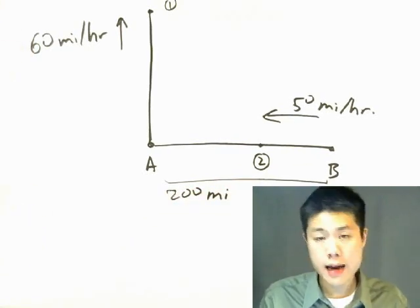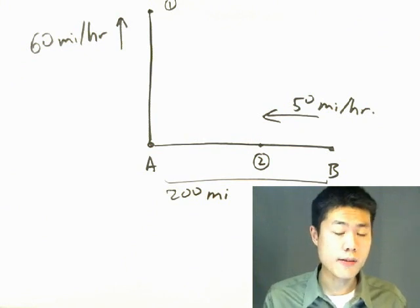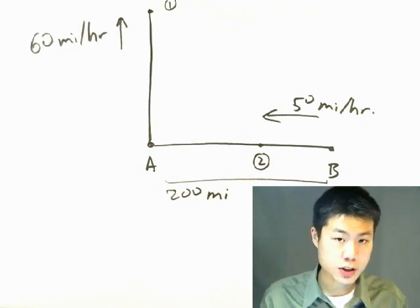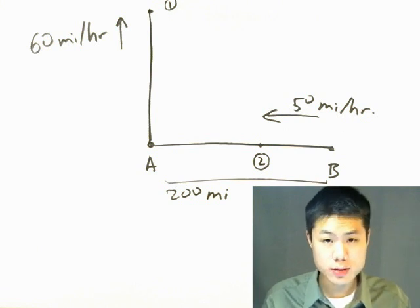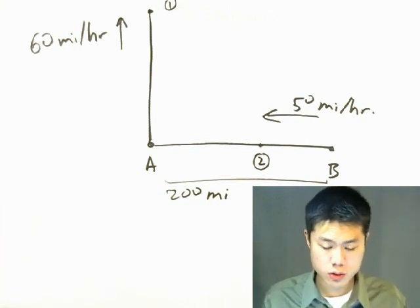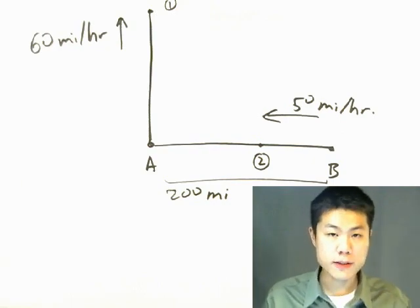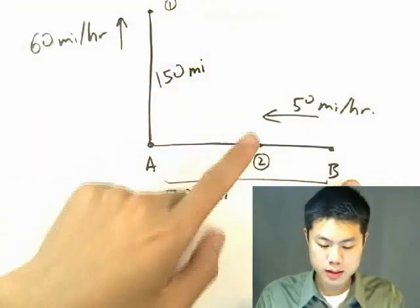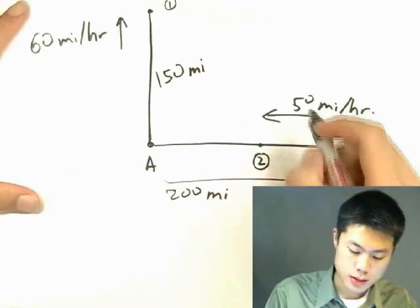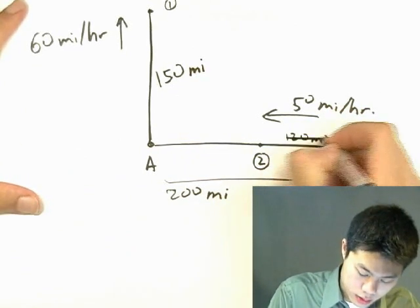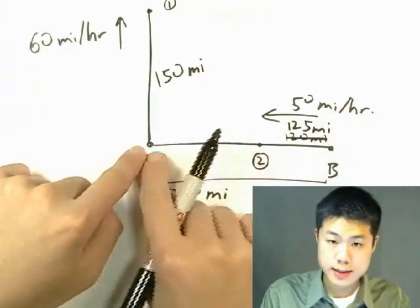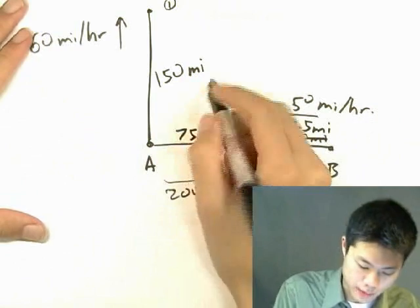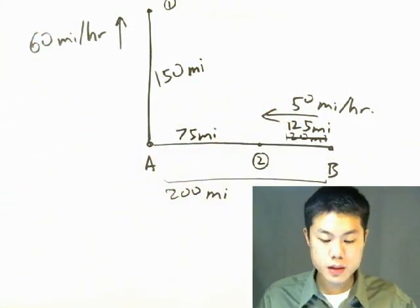We know the time right now is 2.5 hours after they started the journey. It'll be helpful to know where they actually are, so we use rate times time equals distance. 60 times 2.5 equals 150 miles — that's how far car one has traveled north. 50 times 2.5 equals 125 miles traveled west, so the remaining distance from car two to city A is 200 minus 125, which equals 75 miles.